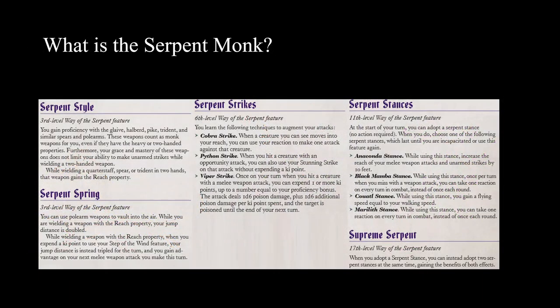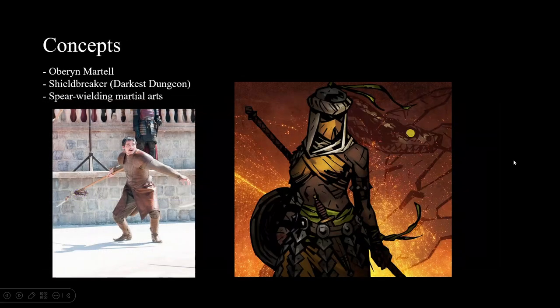Now we're going to look at the Serpent Monk. Ask yourself: what is this subclass? Did they start from the concept and build mechanics onto it, or start from mechanics and build the concept onto it? There's a snake theme for a spear monk, which is a little unusual in fiction. Maybe they came up with the idea of a polearm-using monk first and then mapped the snakes onto it, or maybe they had fiction examples of snaky monks they wanted to capture. Once we dig into this subclass design, the answer becomes pretty clear.